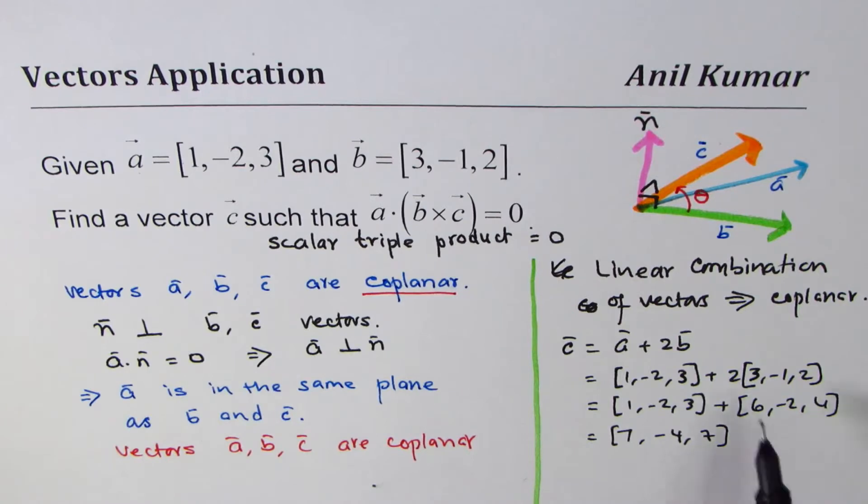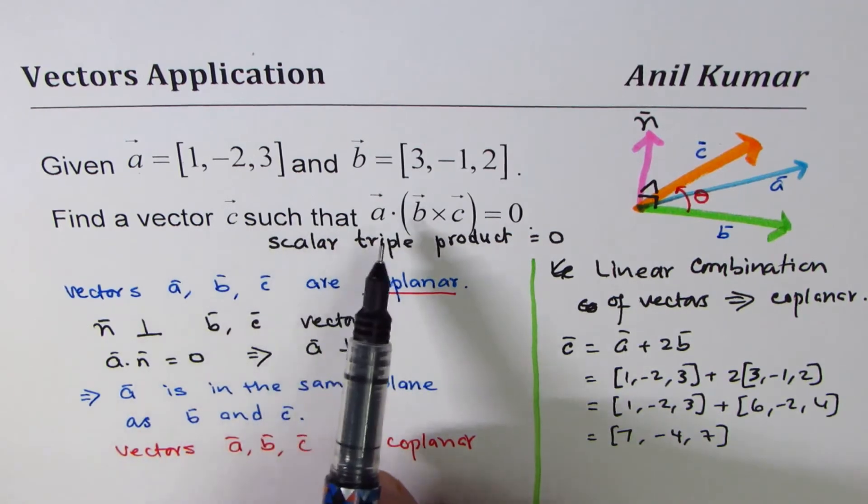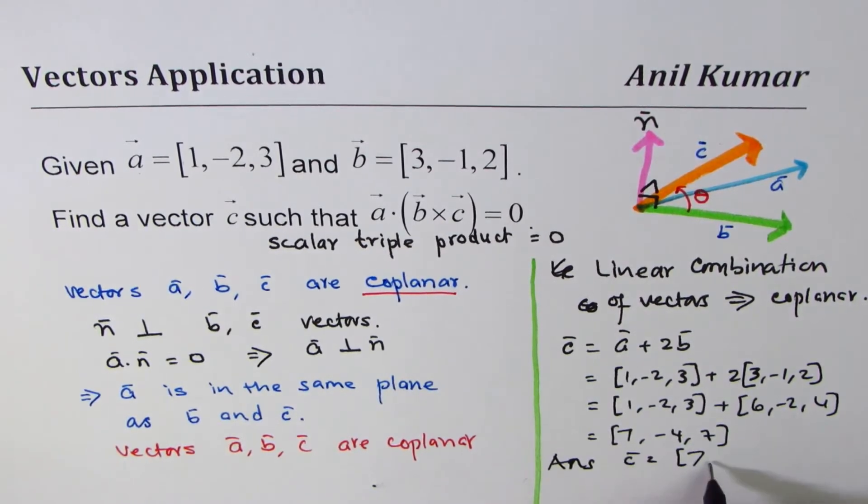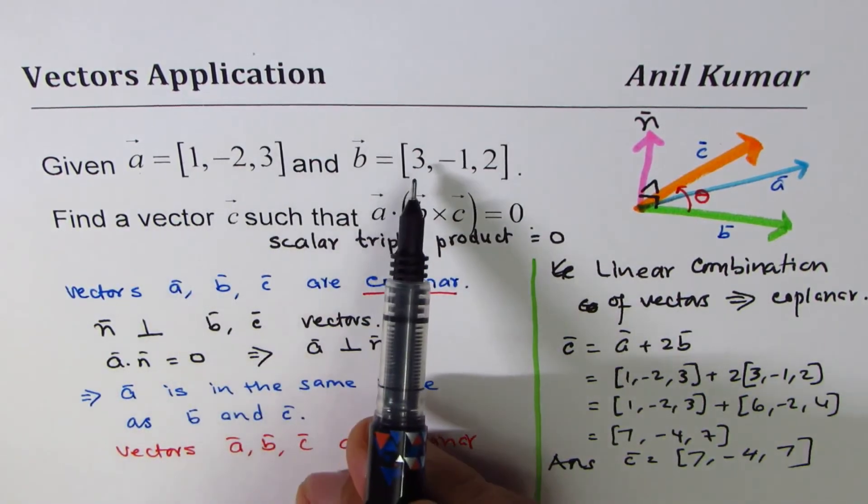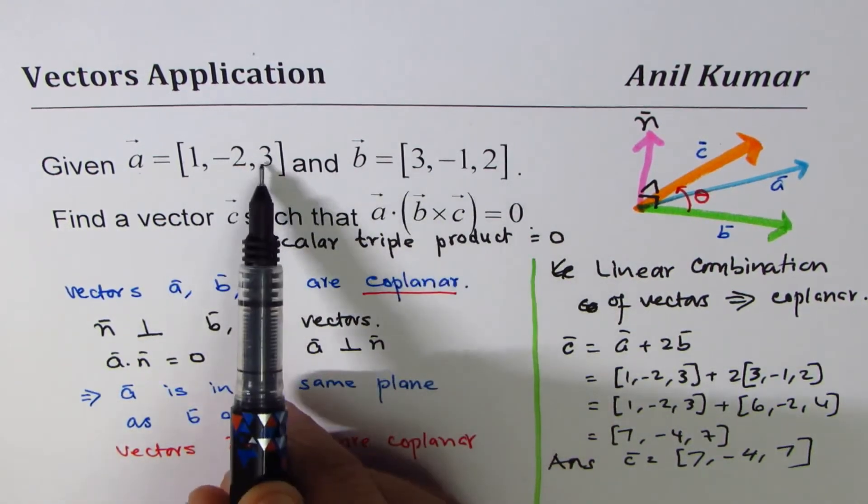The question is find a vector c such that this is true, so our answer is one of those vectors is [7, -4, 7]. You could just add them up, you could write [4, -3, 5], that could be another answer. Many such answers could be there.